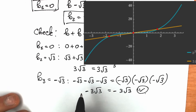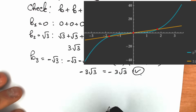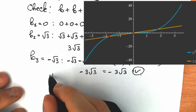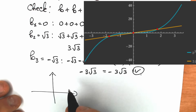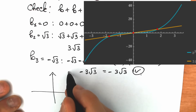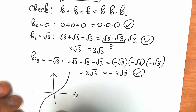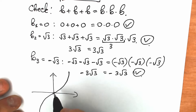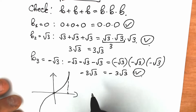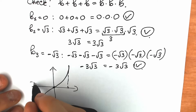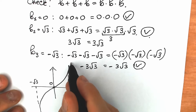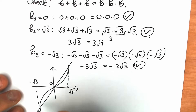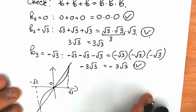Now let's look at a graph for this question. We can easily draw or see this graph from a math library. We will have three points of intersection. For our cubic function we have something like this, and for the linear function we have something like this. The three intersection points are at minus square root of 3, zero, and square root of 3, which confirms our three solutions.